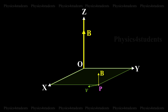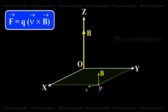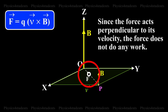The magnetic Lorentz force on the particle is vector F equals Q into vector V cross vector B. Hence, vector F acts along PO perpendicular to the plane containing vector V and vector B. Since the force acts perpendicular to its velocity, the force does not do any work.